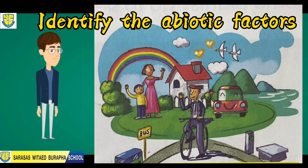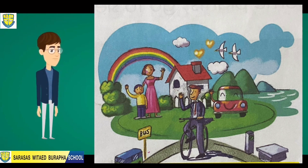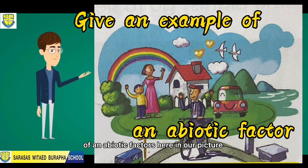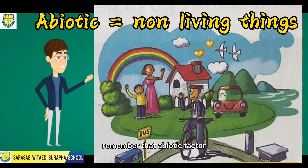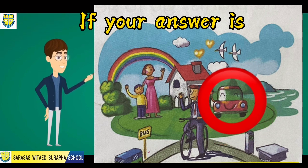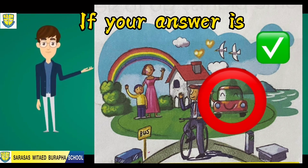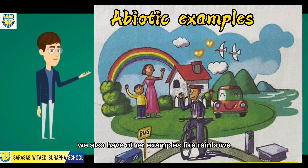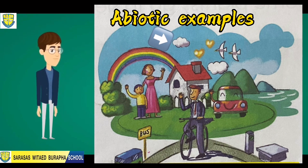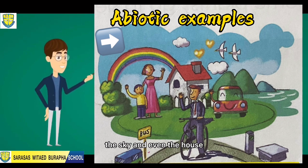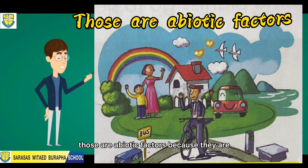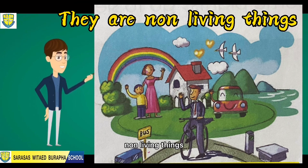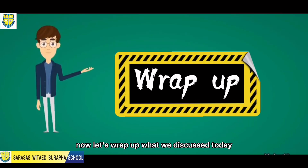Next, let's identify abiotic factors in the picture. Remember, abiotic factors are non-living things. If your answer is the car, your answer is correct, because a car is a non-living thing. We also have other examples like rainbows, clouds, bicycles, mountains, the sky, and even the house — those are abiotic factors because they are non-living things.